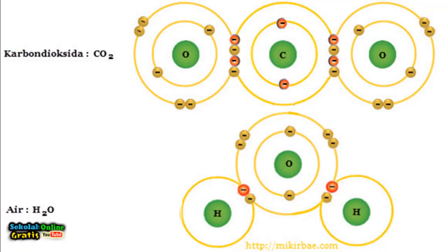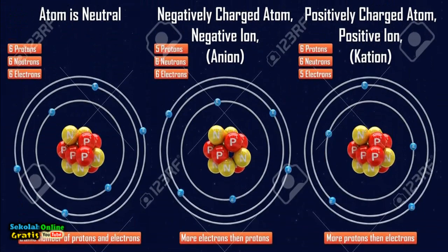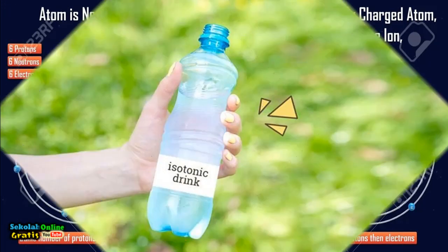Metal elements tend to lose electrons so that they are positively charged or form cations. Non-metal elements tend to accept electrons so that they are negatively charged or form anions. The tendency of an atom to accept or lose electrons can be determined from the number of electrons in its outermost state. If the number of outer electrons is more than 5 it tends to accept electrons. If it is less than 4 it tends to lose electrons.